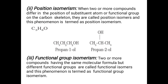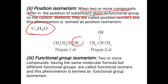Next is position isomerism. When two or more compounds differ in the position of a substituent atom or functional group on the carbon skeleton, they are called position isomers and this phenomenon is termed position isomerism. For example, the molecule with formula C3H8O: if the OH group is on the first carbon it is propan-1-ol, and if it is on the second carbon the structure varies but the formula remains the same — that is propan-2-ol. Such isomerism arising from the difference in position of a functional group or substituent atom is known as position isomerism.